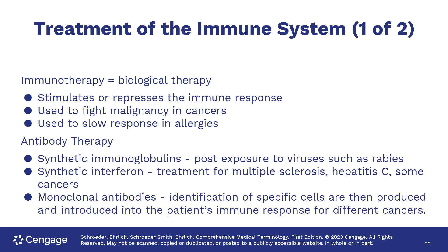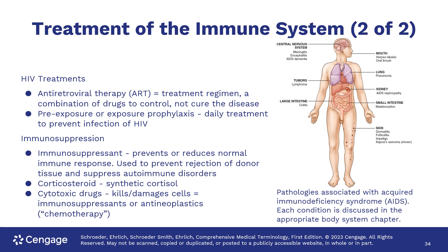Treatments include immunotherapy that stimulates or suppresses the body's immune system. Antibody treatment uses immunoglobulins, interferon, or monoclonal antibodies to help with the immune response. HIV treatment includes antiretroviral therapy to stop the virus from replicating, or pre-exposure and post-exposure treatment to prevent infection. Immunosuppression prevents the immune response, like steroids.